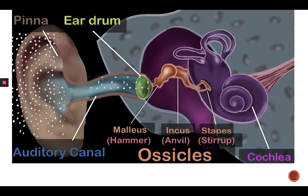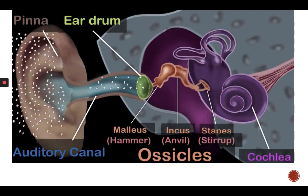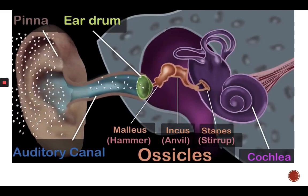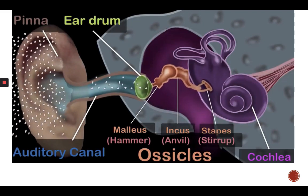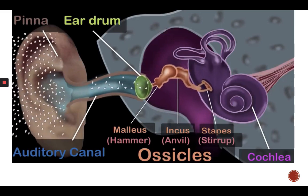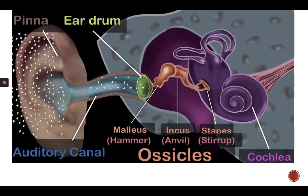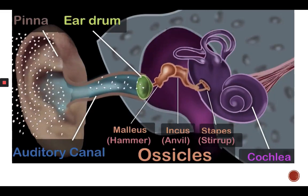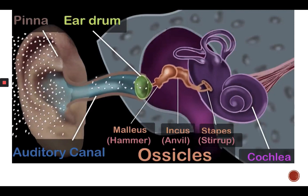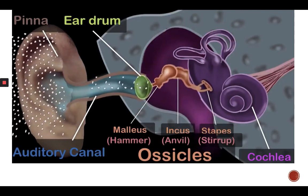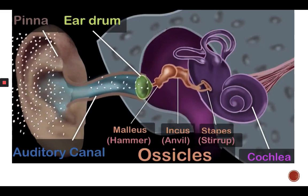What does the cochlea do? Although the bones have been vibrating to the sound, nothing gets heard until these vibrations are converted to electricity and sent to our brain — and that's exactly what the cochlea does. The cochlea is super complex and even a bit mysterious; there are certain things about it we still don't know.